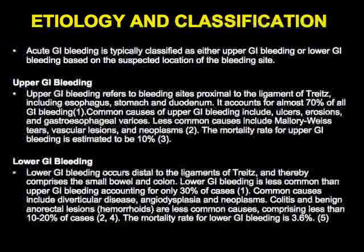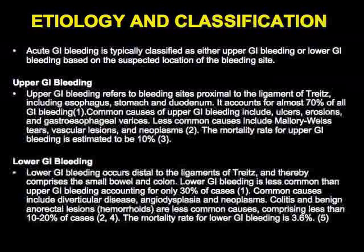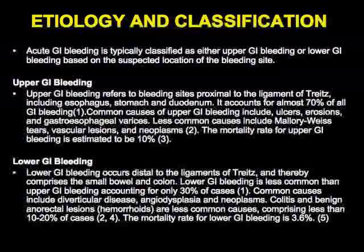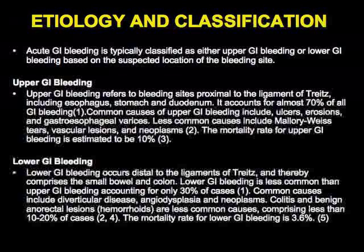Less common causes include Mallory-Weiss tears, vascular lesions, and neoplasms. The mortality rate is up to 10 percent. Lower GI bleeding is typically discussed as distal to the ligament of Treitz — so it's really the small bowel and colon.